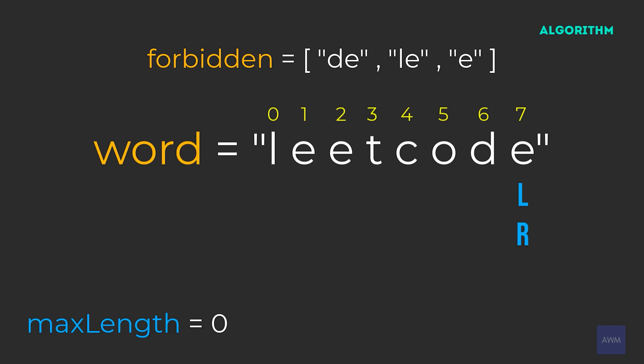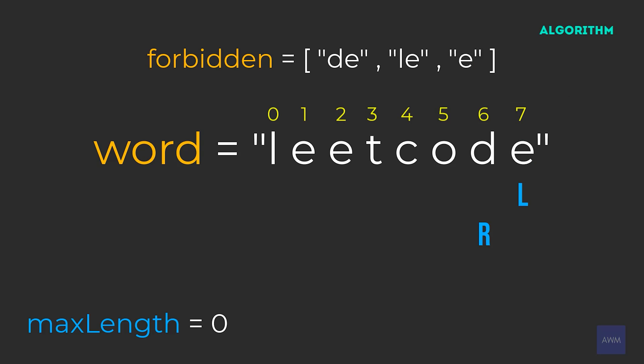What we want to do is starting at our left pointer, iterate up to our right pointer, and for each iteration we check if the substring is valid or not. The substring we are looking at is character E, which is forbidden. A critical part of this optimized algorithm — and the reason why we are iterating backwards — is that since we just identified this current substring is invalid, we want to move our right pointer back by one. You can think of the right pointer as the limit as to what we will iterate up to. So our right pointer gets moved to index six.